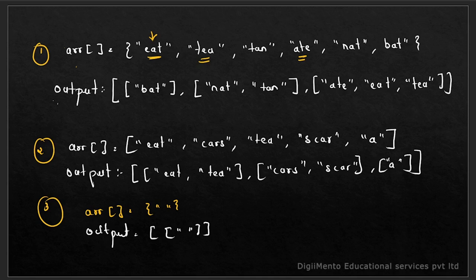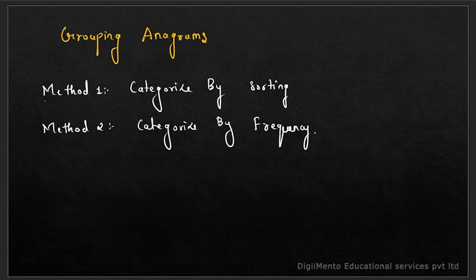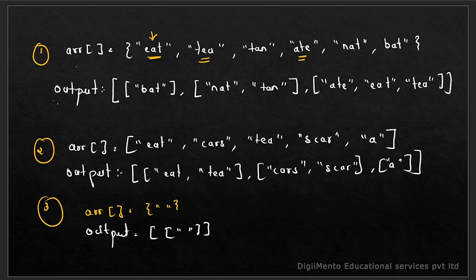Now let's talk about how to solve the problem. Before coming to the two methods, let's look at the general brute force approach. The time complexity will be high, but we should first discuss it. In brute force, we take each string and match it with every other string to check whether they have the same frequency - whether after shuffling one can form the other. But if the string is huge, brute force is not the right way.